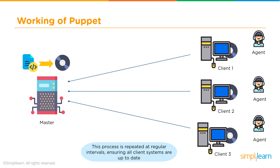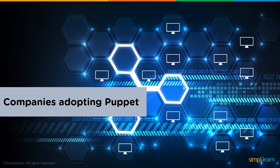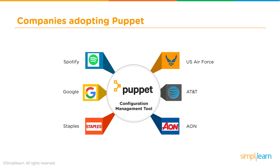This process is repeated at regular intervals, ensuring all client systems are up to date. A number of companies have adopted Puppet to manage their infrastructure, including Spotify, Google, and AT&T. Staples chose to use Puppet for configuration management within their own private cloud. The results were dramatic — the time the IT organization saved in deploying and managing their infrastructure through Puppet enabled them to open up time to experiment with other new projects and assignments. A real tangible benefit to a company.